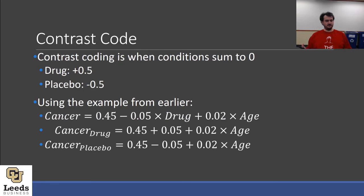A frequently more useful coding scheme is contrast coding. Contrast coding has the conditions sum to 0 across all of your different options. So we have drug at plus 0.5 and placebo at minus 0.5. This does slightly tweak what our equation is — we now have an intercept of 0.45 and our weight on drug is 0.05. This still gives us 0.4 as the base rate for if you are taking the drug, and 0.5 as your base rate if you are not, because adding and subtracting 0.05 brings it to 0.4 and 0.5 respectively.